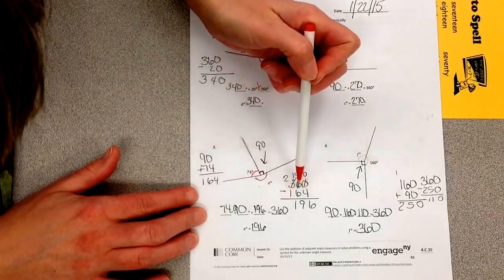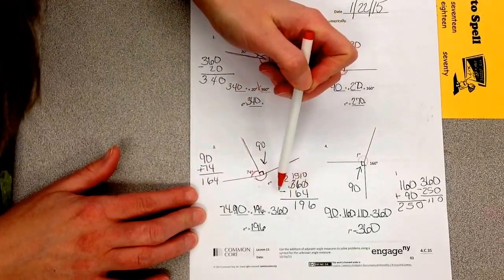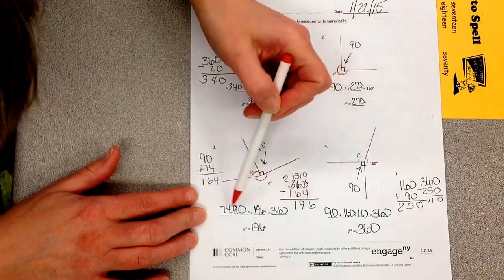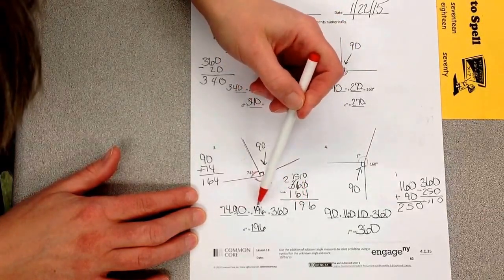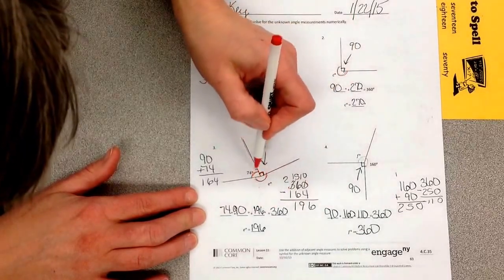So then we're going to subtract 360 from 164 and get 196. So 74 plus 90 plus 196 gives us 360. It goes all the way around.